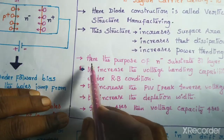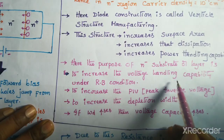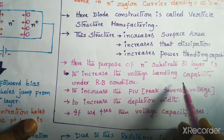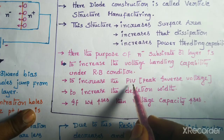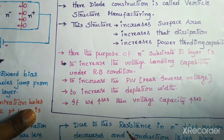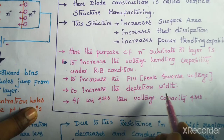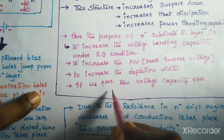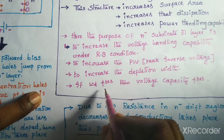The purpose of the N minus substrate or layer is to increase the voltage handling capability and power handling capability. To increase the peak inverse voltage capability, the N minus substrate is used. Because of adding this N minus substrate, the depletion width will get increased. If the depletion width increases, then voltage capacity increases — it is proportional to the depletion width.